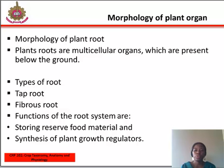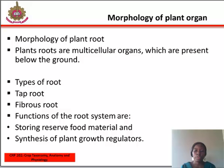Characteristics of tap roots: 1. They are the one main root from which smaller branch roots emerge. 2. They are the continuation of the primary root. 3. They are involved in the storage of food and anchoring the plant. Characteristics of fibrous roots: 1. They are finely branched secondary roots. 2. They cover a large area and cannot go as deep as tap roots. 3. They are more efficient in absorption of water and minerals.